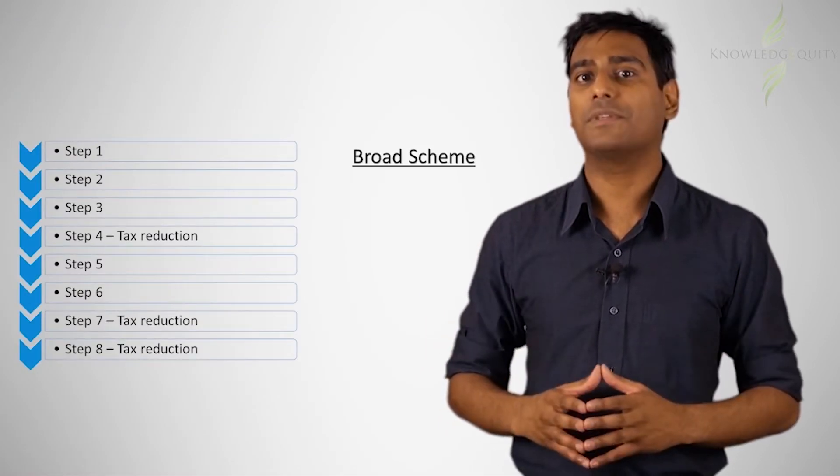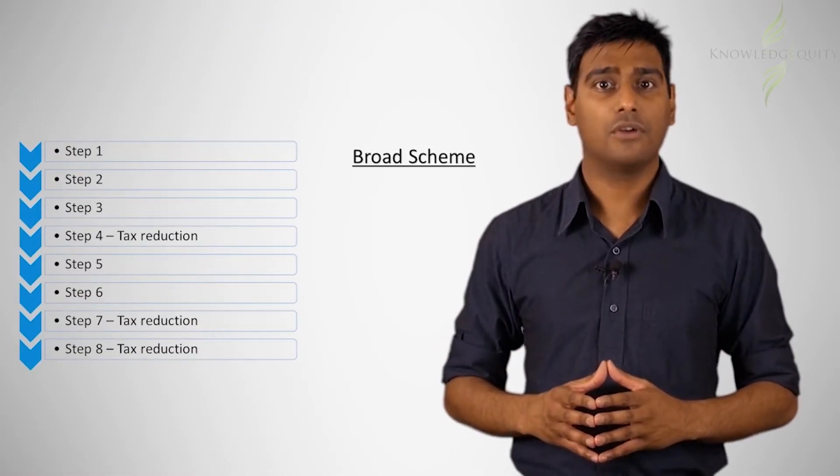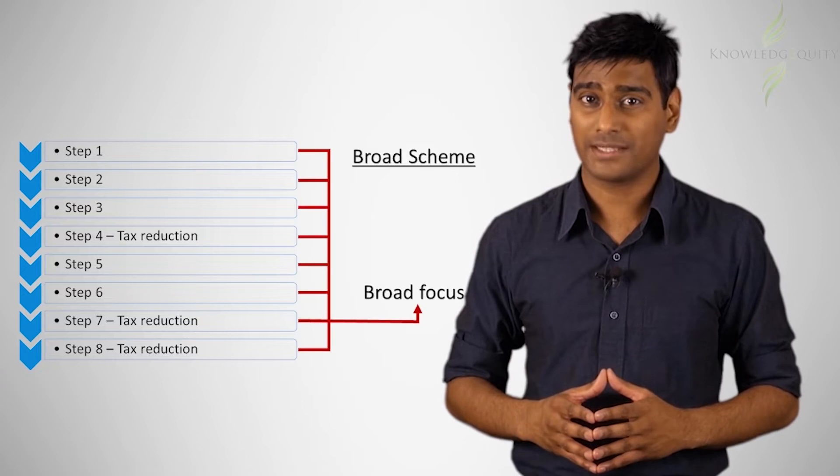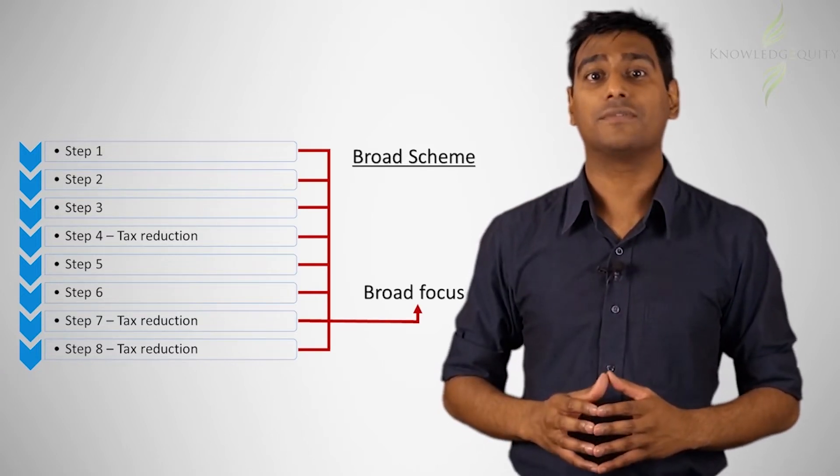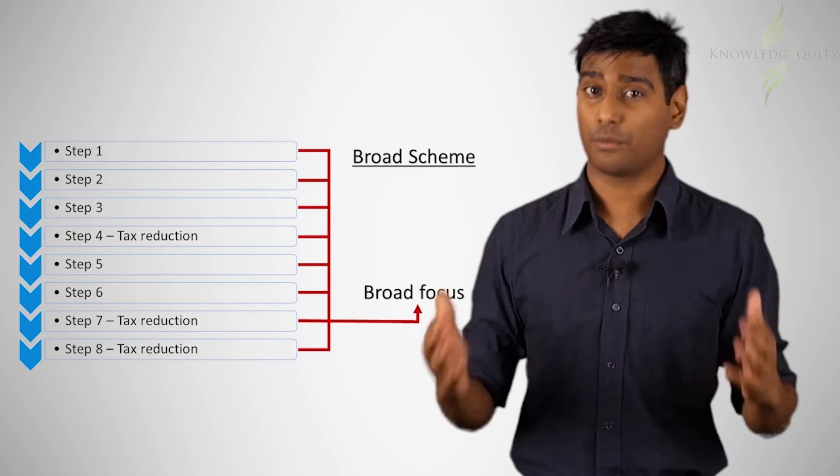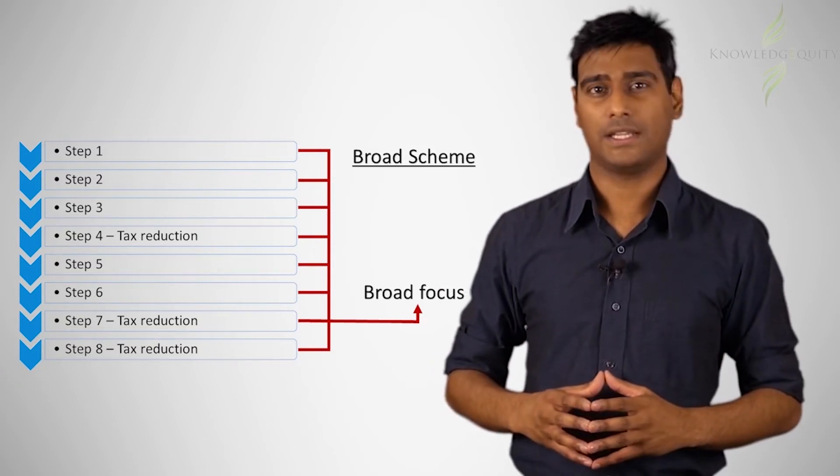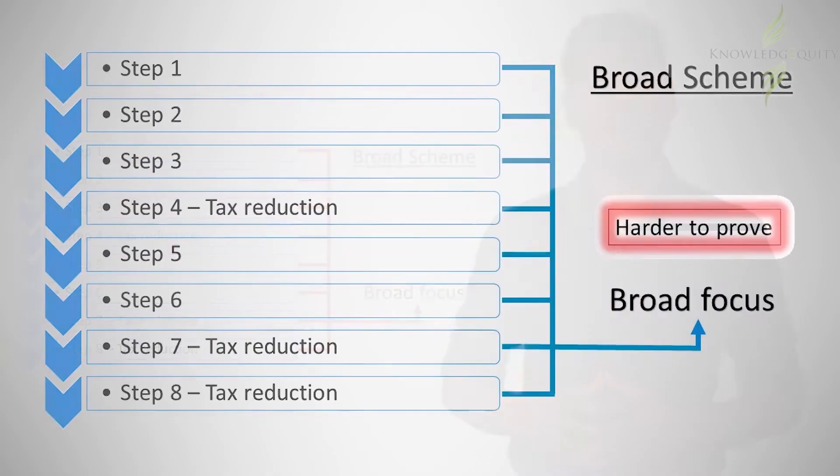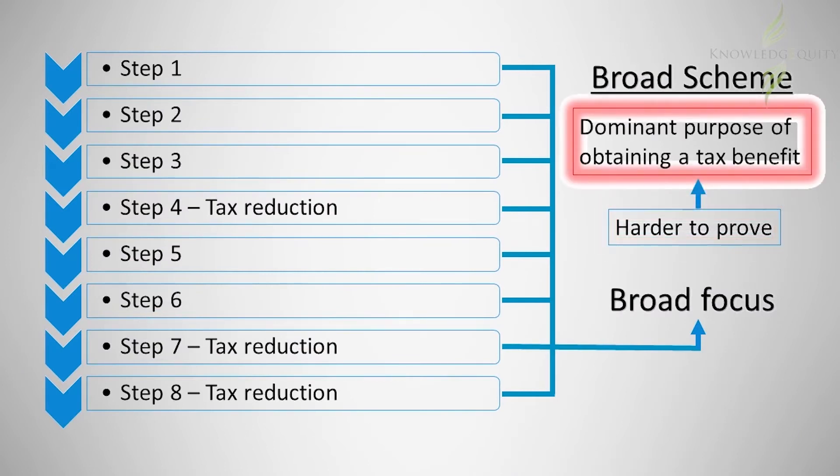Another way the tax office could identify the scheme is in a broad manner. The broader scheme encompasses a wider set of facts that not only incorporates the tax minimization actions but also the actions of successfully running a retail business for profit. Consequently, under the definition of the scheme, it is harder to prove that the dominant purpose of entering into the broad scheme was to obtain a tax benefit, because it could be argued that the tax minimization aspect was only a minor aspect of setting up and running a retail store for profit.